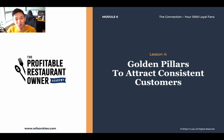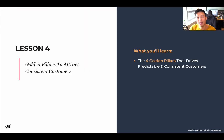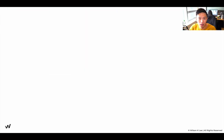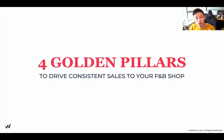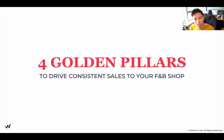Hello, aces. Welcome back to module six, lesson number four: the four golden pillars and creating a consistent and predictable stream of revenue. As you already know, if you're just relying on one source of revenue, which is your dine-in, then most likely you're going to be out of business. That's the reason why we need to have four different golden pillars for different streams of revenue coming in, so you can diversify to withstand any economic downturn.